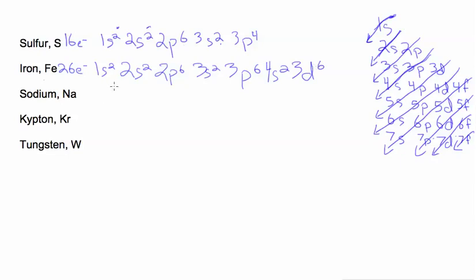Sodium has 11 electrons. So we follow our Aufbau diagram. We do 1s2, 2s2, 2p6, and that gives us 10, and then 3s1.